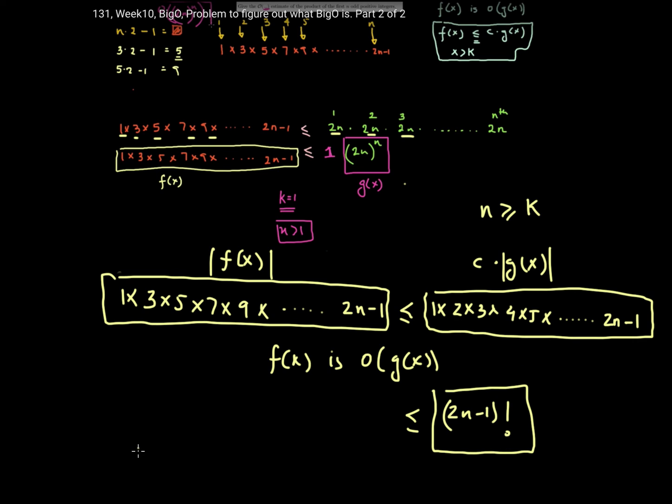Okay so I can now say f(x) is big O of 2n minus 1 factorial. And if you want to clean this up a little bit further, you can go up to one extra number, 2n minus 1 times 2n, and simply say 2n factorial just to clean up that minus 1.